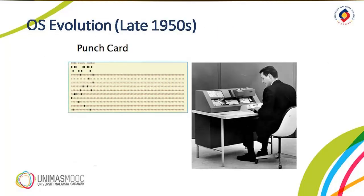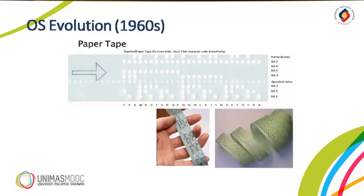In the late 1950s, computers used a batch operating system in which the computer ran batches of jobs without stopping. Programs were punched into cards, just like in the picture. In the 1960s, paper tapes were used to code the program before processing. The picture on this slide shows how the paper tapes look.